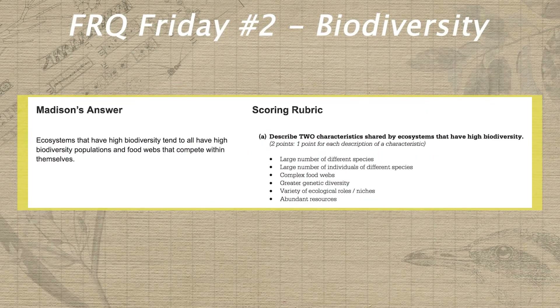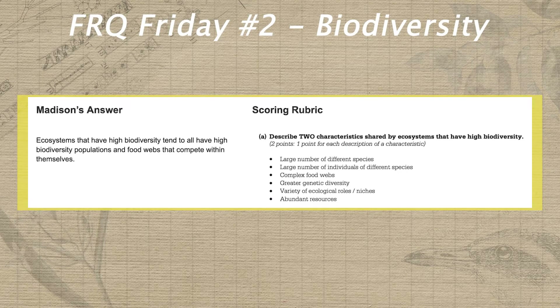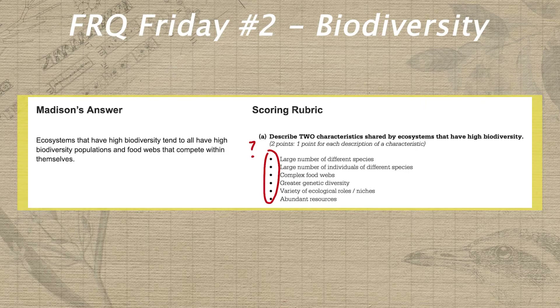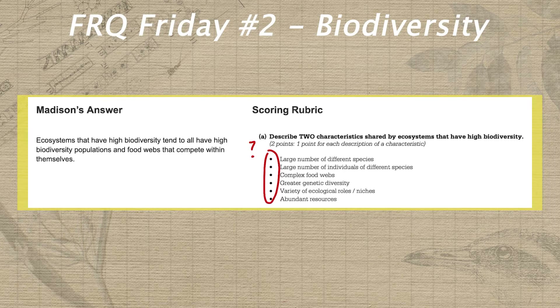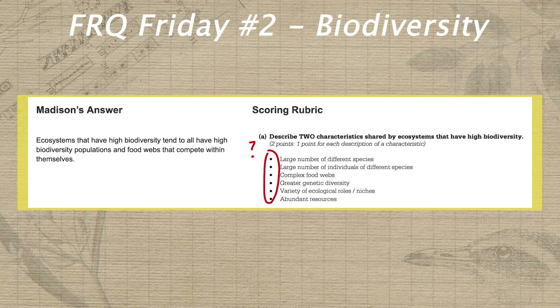As usual, the scoring guide for today's Practice FRQ is down in the video description below, or you can just follow along on screen. Remember that as we score each part of Madison's answer, we're gonna ask ourselves which possible rubric points she might be earning, and then decide whether or not she has enough of the correct answer components in order to earn that point.